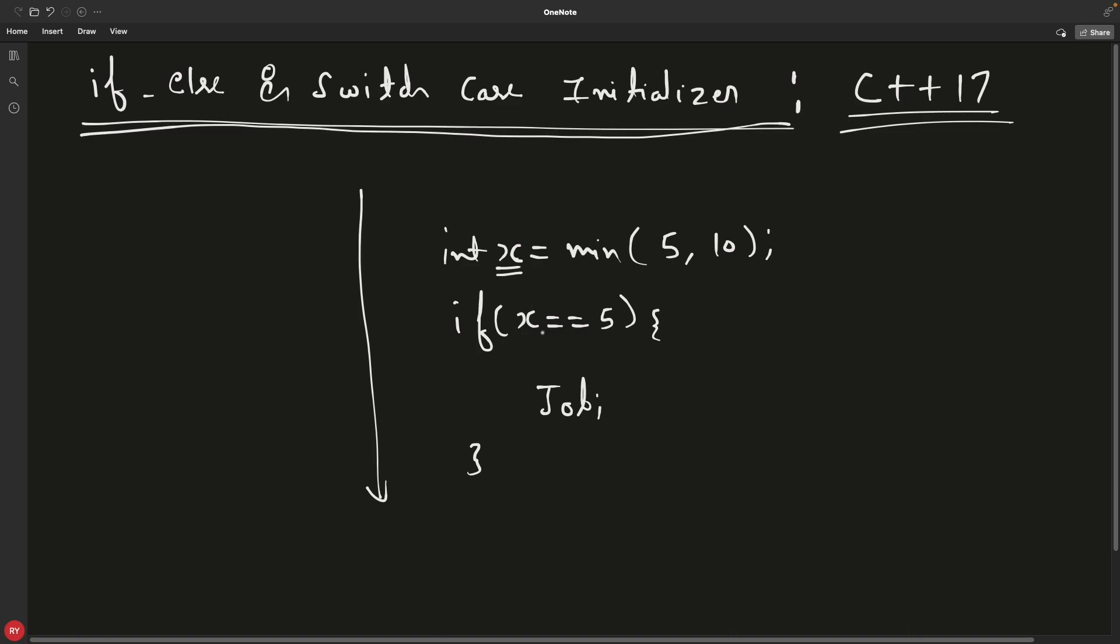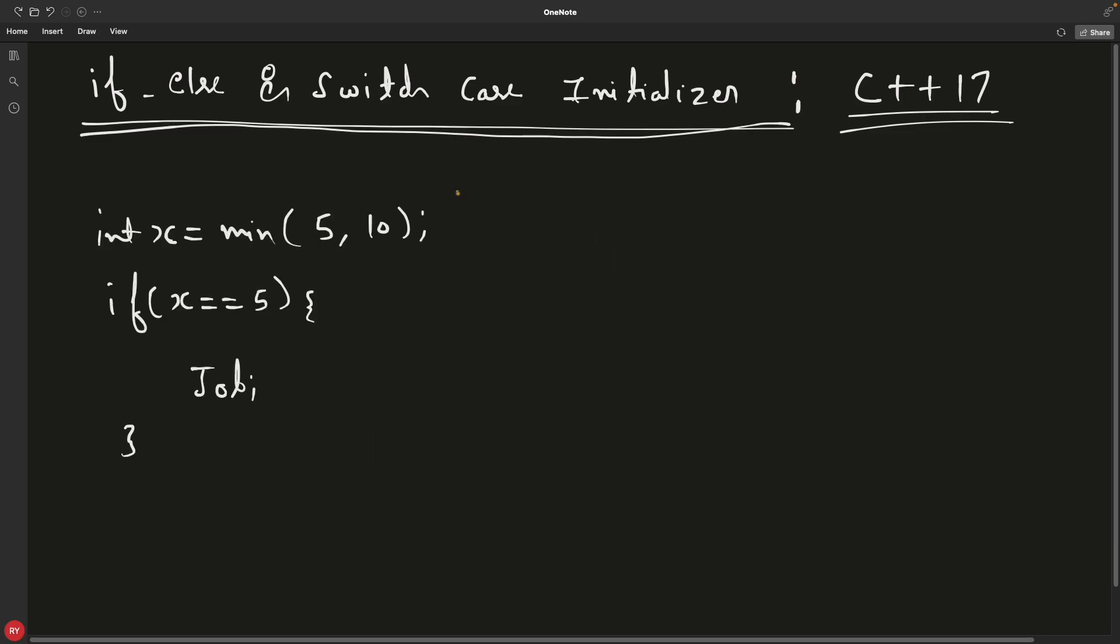But now do we have any better solution? Yes we have. What is that? Let's see. So I can write this piece of code like this: if integer x equal to min(5, 10), and then notice this, here I'm giving this semicolon, and then say if x is equal to 5, then you do my job. This is your job.